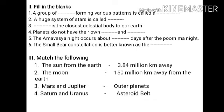We are going to match the following. The Sun is 150 million km away from Earth. The Moon is 3.84 lakh km away. Mars and Jupiter — asteroid belt. Saturn and Uranus — outer planets.